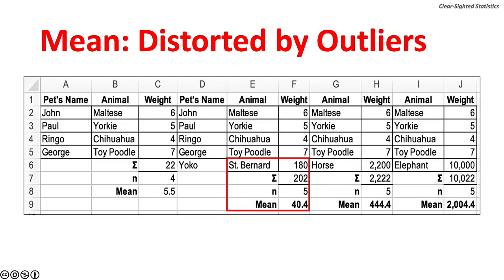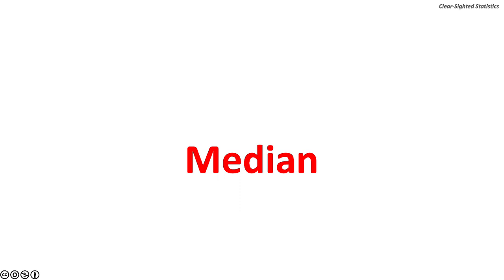Let's see how the mean is distorted by outliers. We add a fifth dog, Yoko, who is a 180-pound St. Bernard. The mean is now 40.4 pounds. Now suppose Yoko is a 2,200-pound horse — the mean is now 444.4 pounds. Now suppose Yoko is a 10,000-pound elephant — the mean is now 2,004 pounds. The fact that the mean can be distorted by outliers leads to another very important measure: the median.